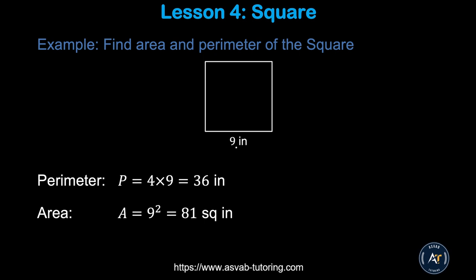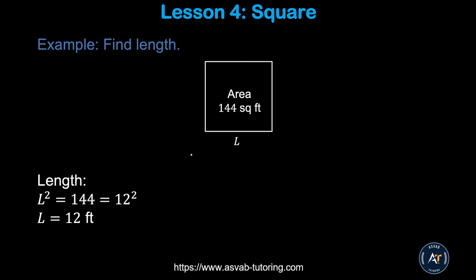Here is a square with one side equal to 9. The perimeter is 9 times 4 = 36, and the area is 9 squared = 81 square inches. If the area is given as 144, you know area = l², so l = the square root of the area.